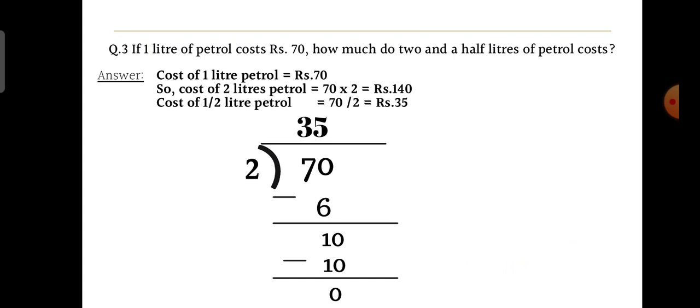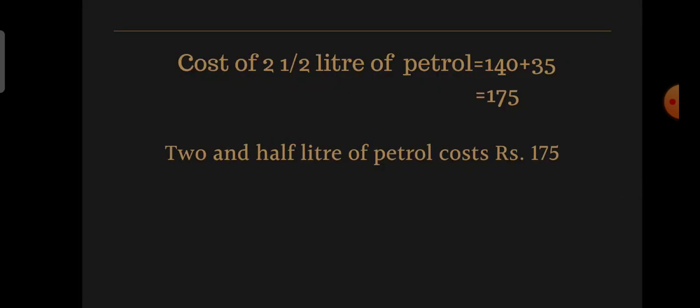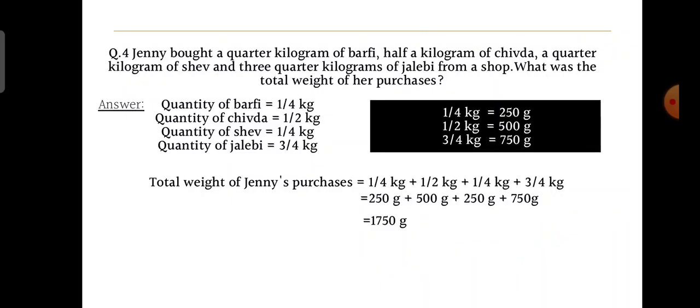Half liter of petrol means half of 70, so divide 70 by 2. You have to write 6 below the 7: 7 − 6 = 1, bring down the zero, 10 ÷ 2 = 5, so the answer is 35. Cost of two and a half liters of petrol is 140 + 35 = rupees 175.